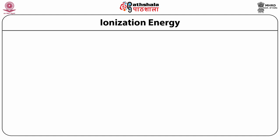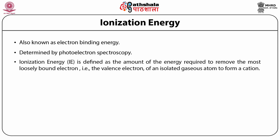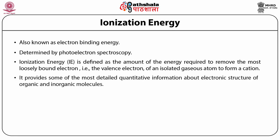Ionization energy, listed in textbook appendices for most elements on the periodic table, is the energy required to remove an electron from a neutral atom in the gaseous phase, typically in kilojoules or electron volts per mole. It is also known as binding energy and is determined by photoelectron spectroscopy. Ionization energy (IE) is defined as the amount of energy required to remove the most loosely bound electron — the valence electron — of an isolated gaseous atom to form a cation. It provides some of the most detailed quantitative information about the electronic structure of organic and inorganic molecules.